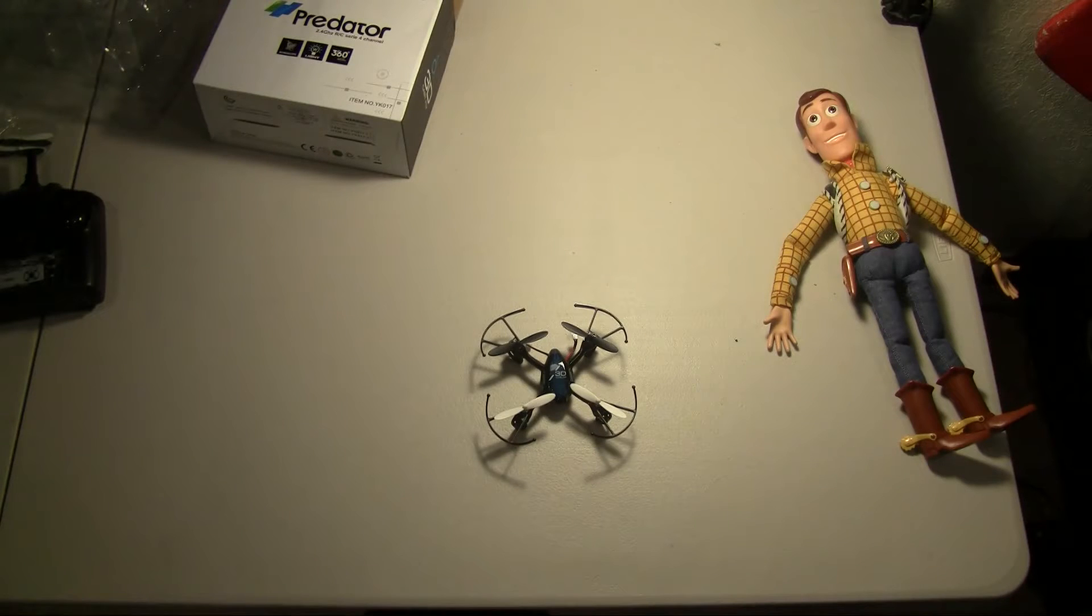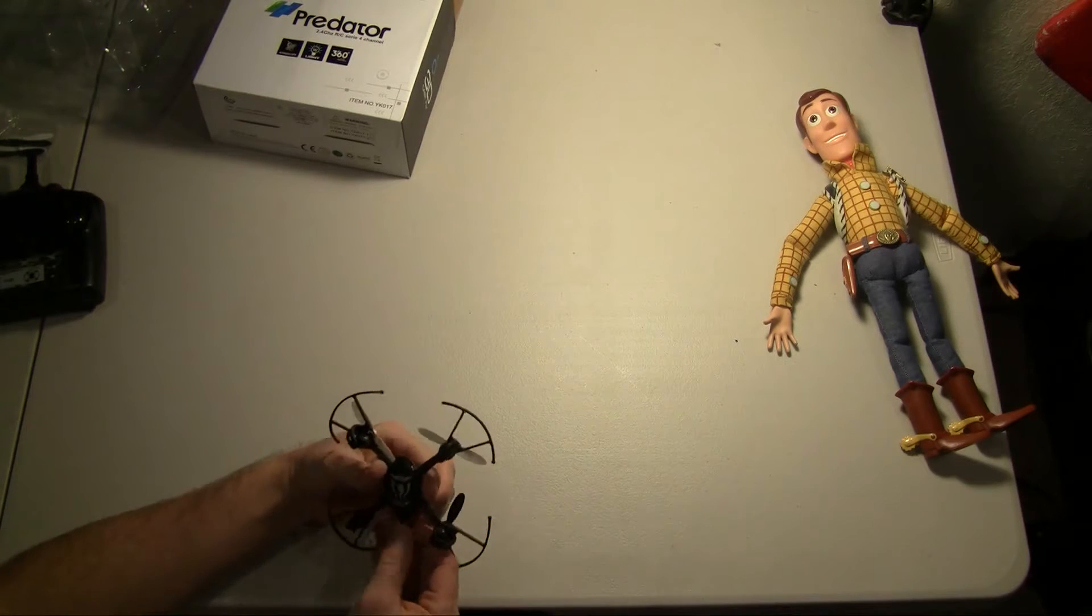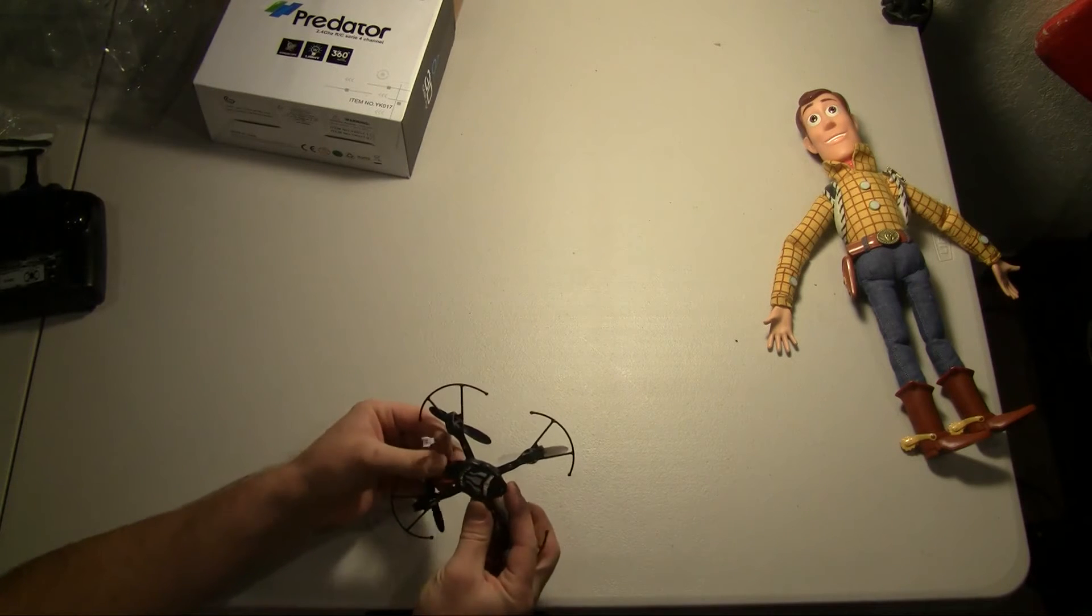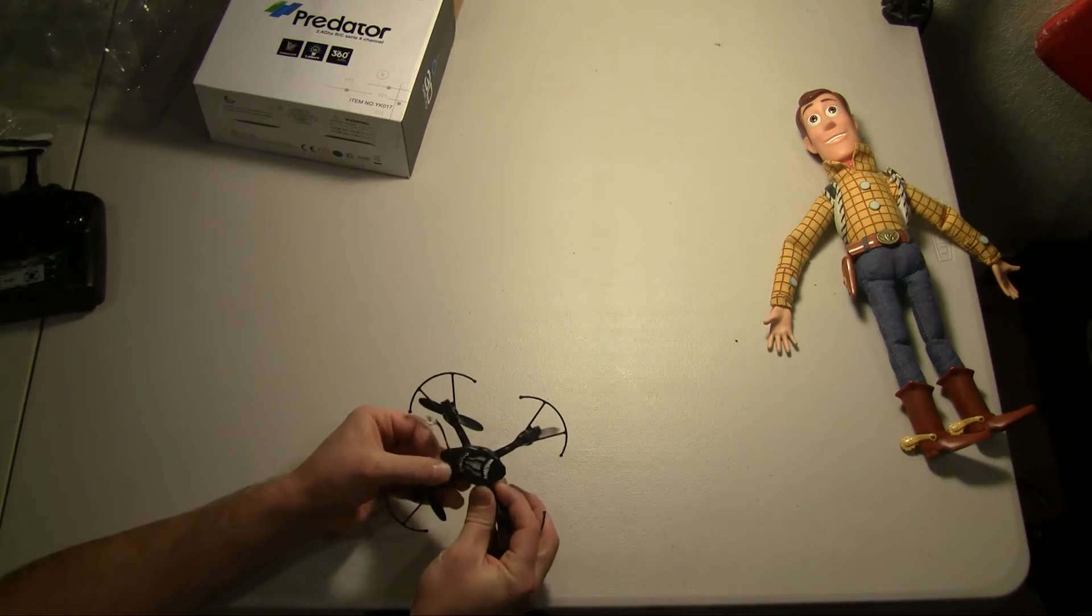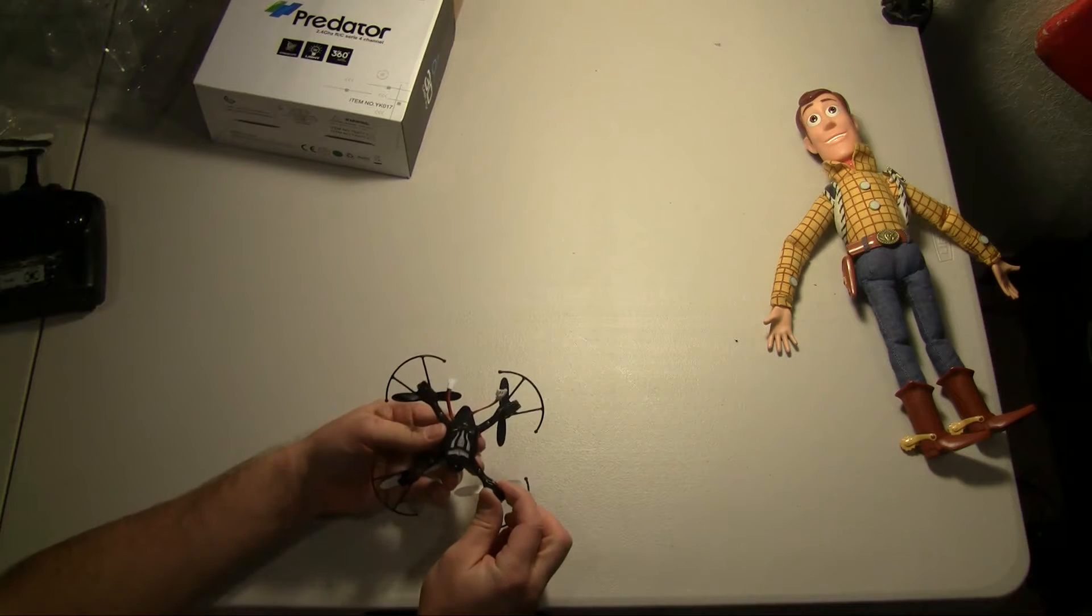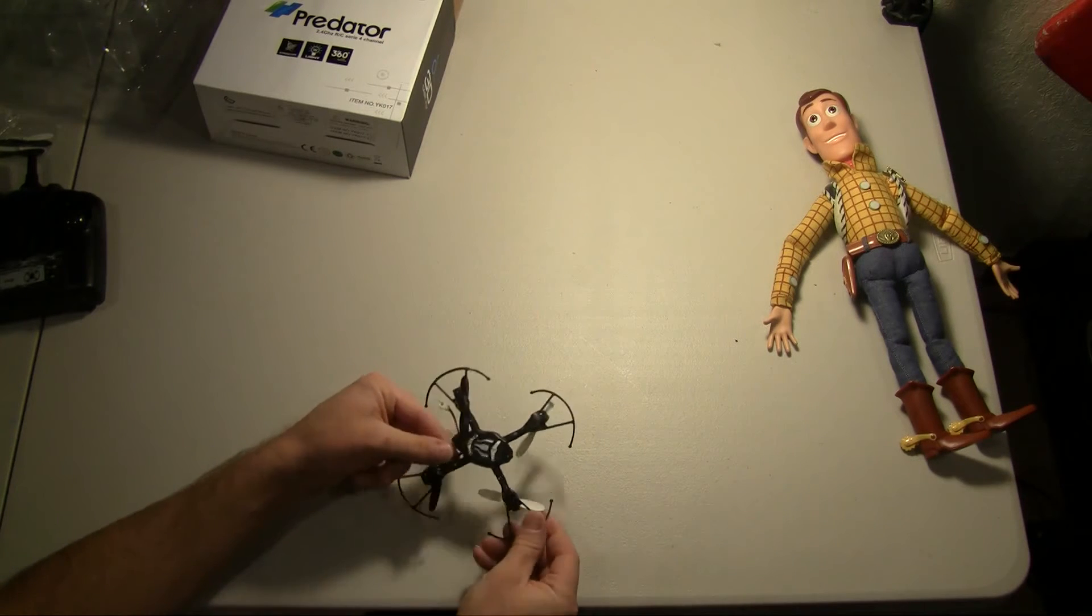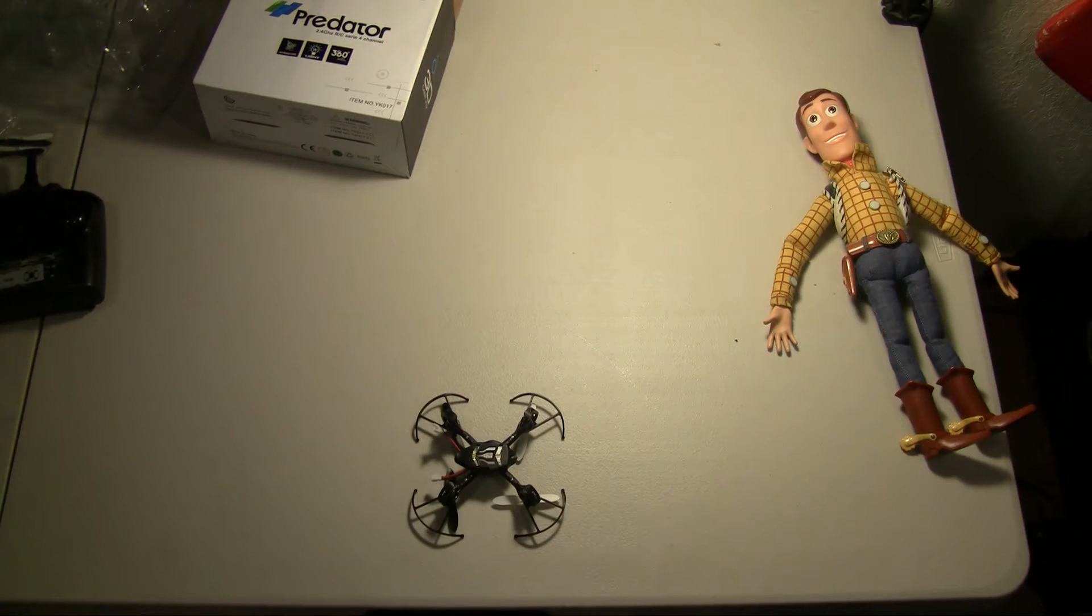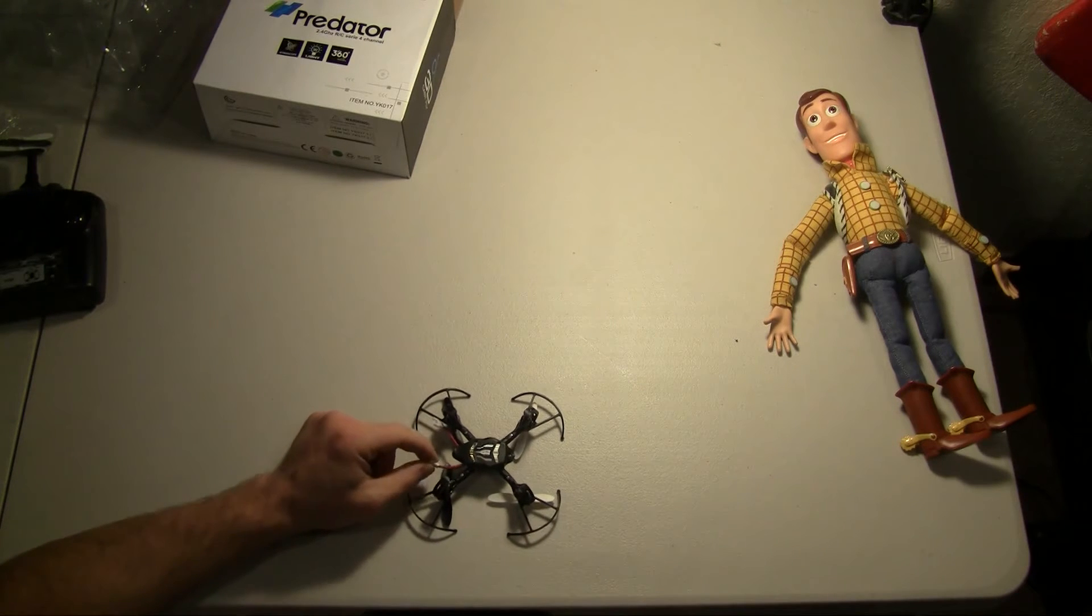One thing I want to point out is that this battery here is a 300mAh, one cell, 3.7 volt battery. It slides out pretty easily, but there are some modifications I'd like to show you. You can buy a 5-pack of batteries on Amazon for about $15, and they last a whole lot longer than the stock battery.